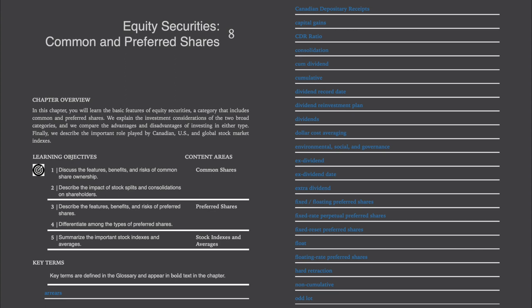CSC Volume 1, Chapter 8: Equity Securities — Common and Preferred Shares Overview. In this chapter, you will learn the basic features of equity securities, a category that includes common and preferred shares. We explain the investment considerations of the two broad categories and compare the advantages and disadvantages of investing in either type. Finally, we describe the important role played by Canadian, US, and global stock market indexes. All key terms and their definitions found in this chapter will be listed at the end of this audio recording.